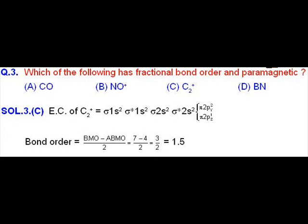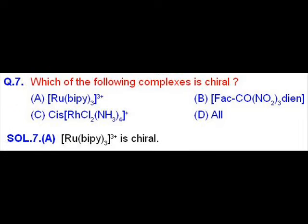Question number 7 is about chirality of the complexes given to us. In option A, ruthenium tris bipyridyl cation is given to us and it is a tri-chelate compound. Tri-chelate compounds are chiral in nature as they do not have any plane of symmetry or center of symmetry.